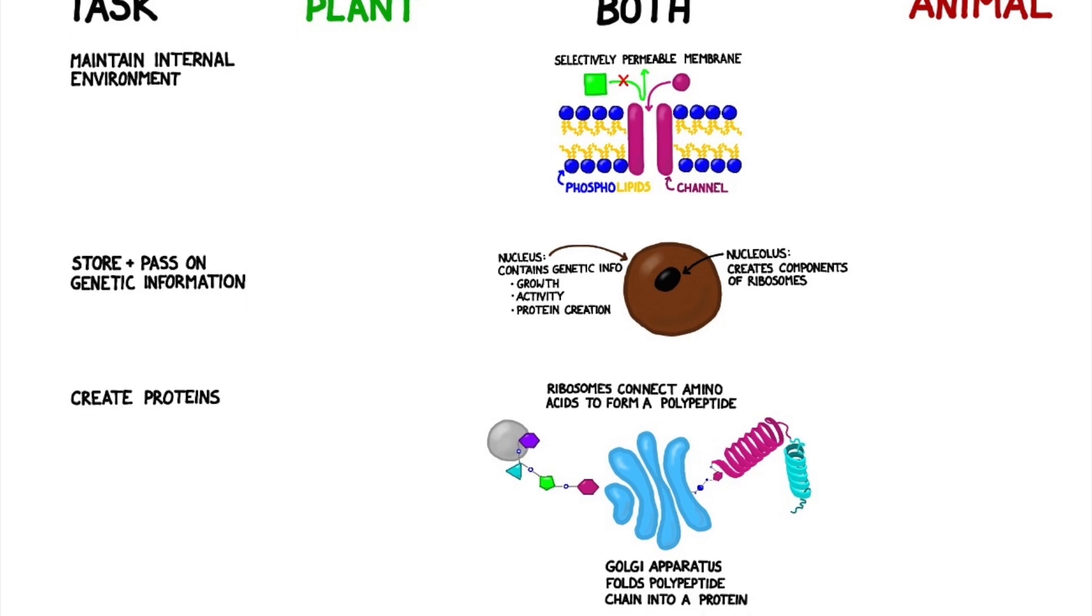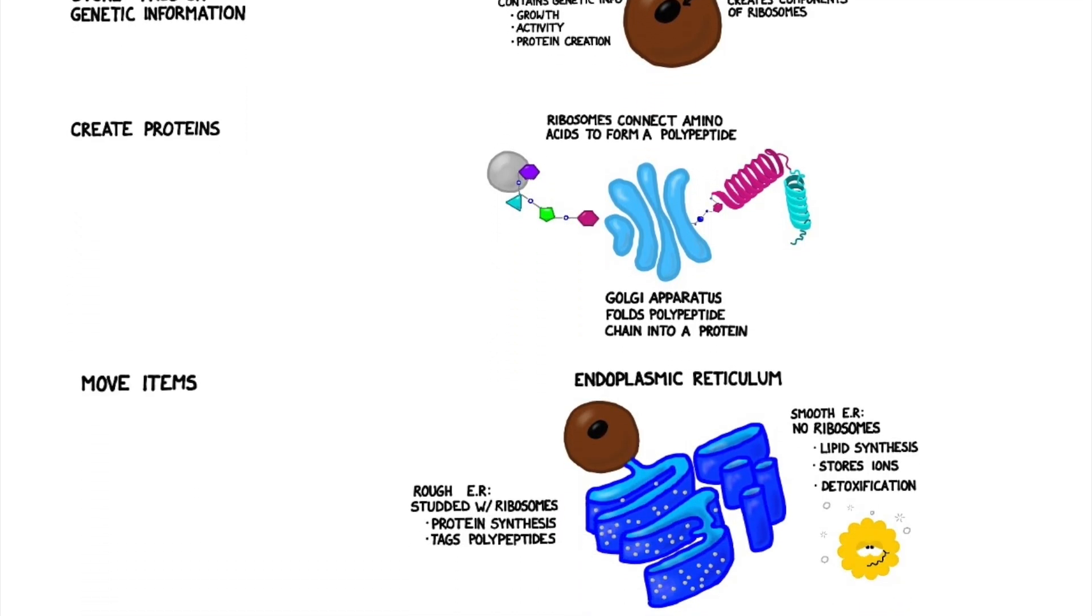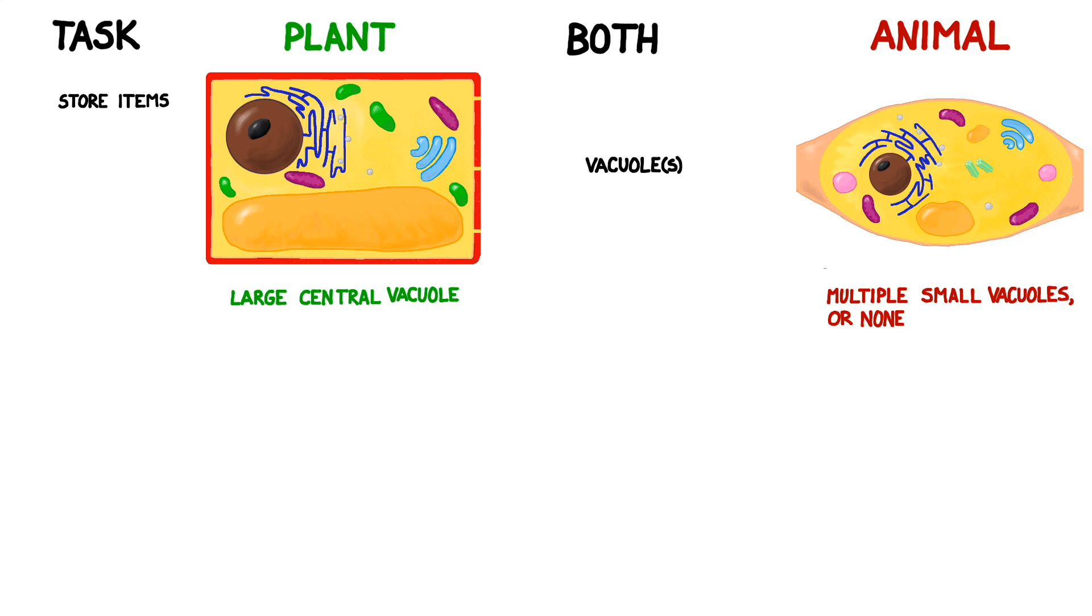So far, plant and animal cells have tackled their problems in very similar ways, but here's where we're going to start to diverge a little bit. Both cell types use vacuoles for storage, but they differ in the specifics. Plant cells have a large central vacuole, and when it's full, it helps to provide support to the cell by creating turgor pressure. This is why if you forget to water a plant for a few days, it gets all droopy and wilts, but if you water it, it tends to perk right back up. Animal cells can have either many small vacuoles or none at all, and they only use them for storage rather than support.